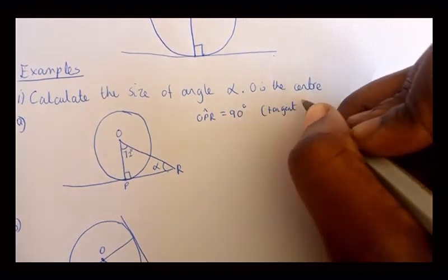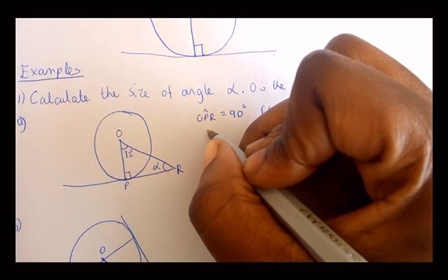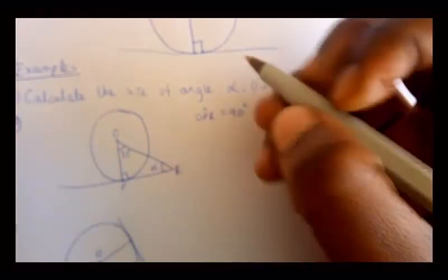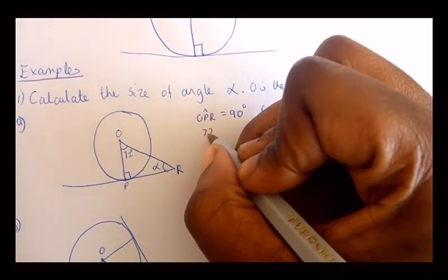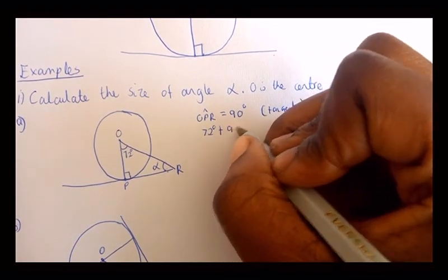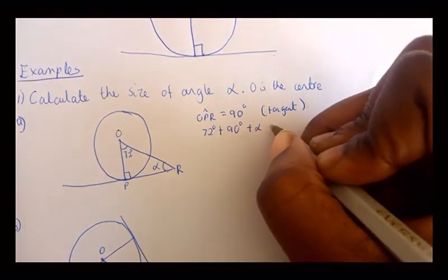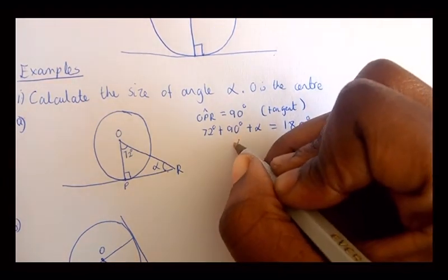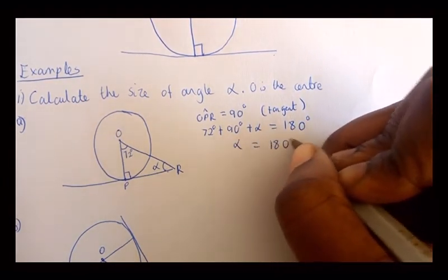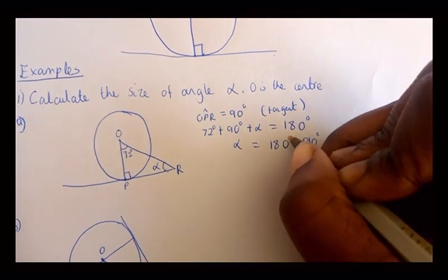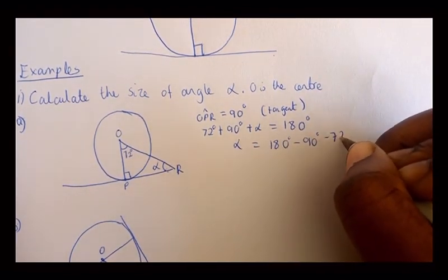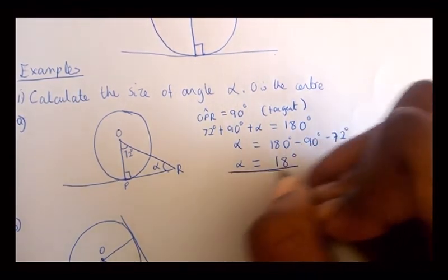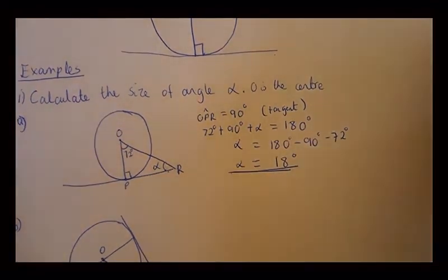Angles in a triangle add up to 180 degrees, so 72 degrees plus 90 degrees plus alpha equals 180 degrees. Therefore alpha equals 180 minus 90 minus 72 degrees, which gives alpha equal to 18 degrees.